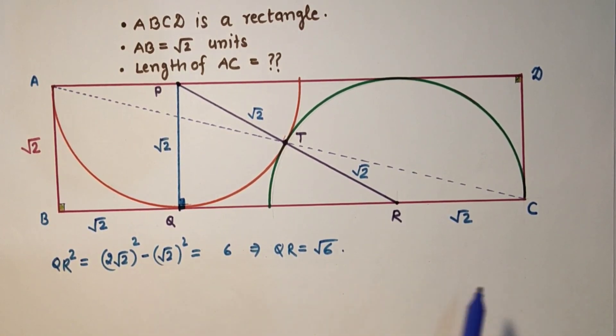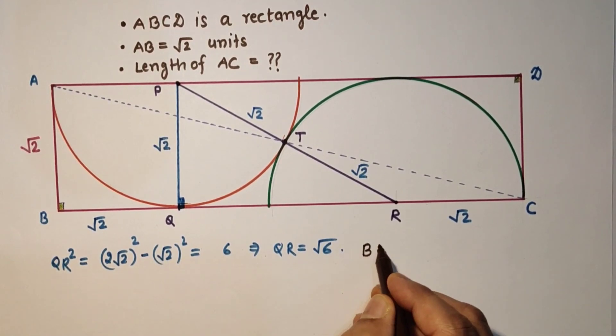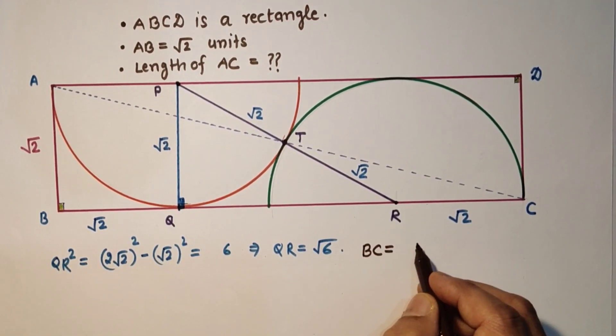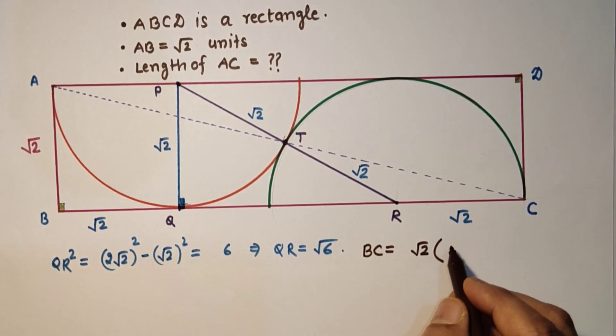So therefore BC will be root 2 plus root 6 plus root 2. So 2 root 2 plus root 6. Taking root 2 common, it will be root 2 times 2 plus root 3.